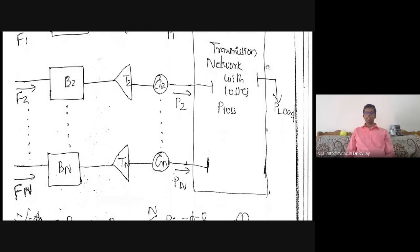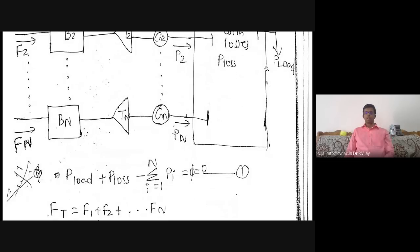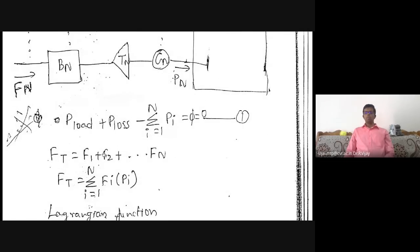The objective function of economic load dispatch with losses is to minimize the total fuel cost. The total fuel cost Ft is the sum of fuel cost functions of each generating unit — F1(P1), F2(P2), up to FN(PN). Mathematically: Ft = summation from i=1 to N of Fi(Pi). That is the total fuel cost.